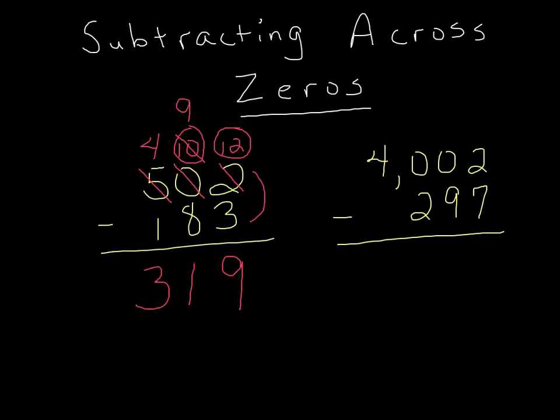So I'm going to, again, start with my ones place here. Let's go ahead and switch my color. And I have my ones place is a two and a seven. I notice that my two is smaller than my seven, so I want to regroup here. Well, I go to my tens place and there's nothing to take again. It's zero. There's no value there. I can't take anything to give over to my ones place.